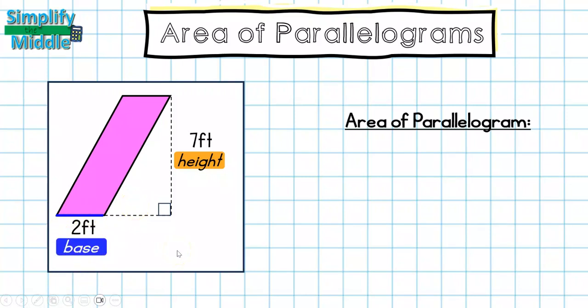Area of a parallelogram is area equals base times height. In this one, we're going to substitute in 2 for the base and 7 for the height. So the area of this parallelogram is 14 feet squared. All we're doing is taking the height and the base and multiplying together.